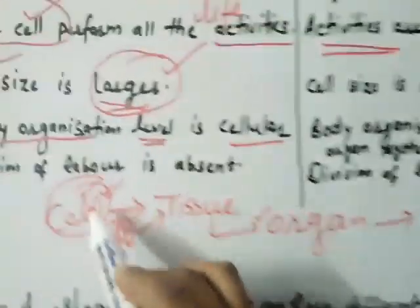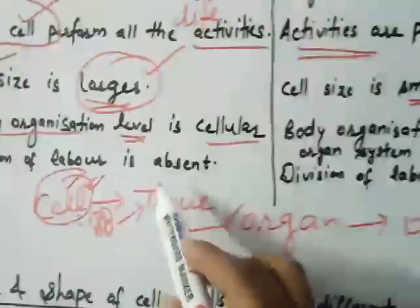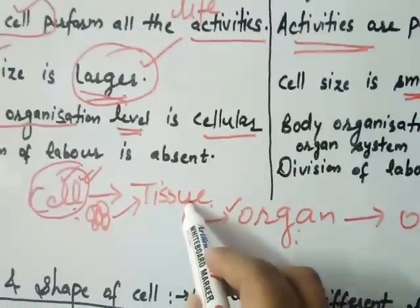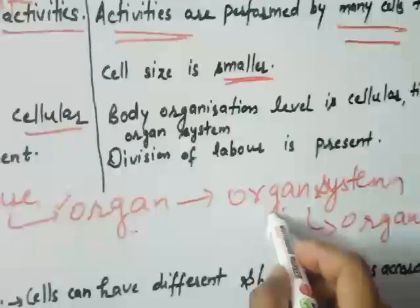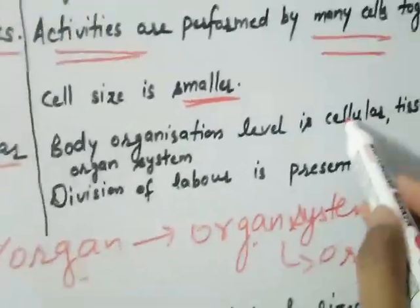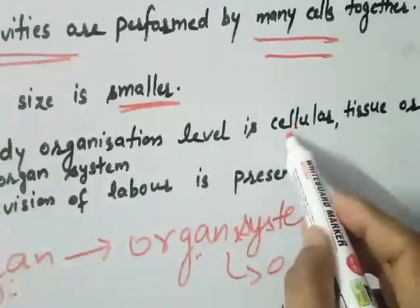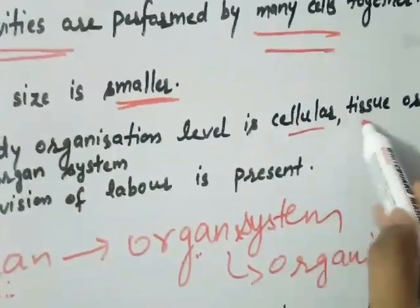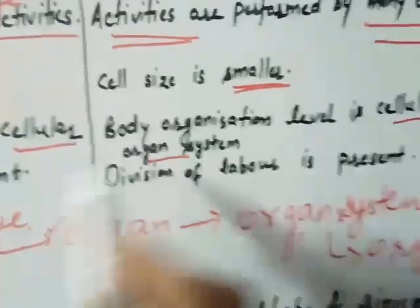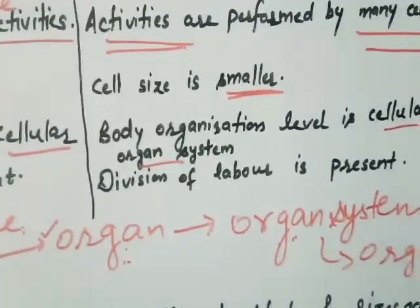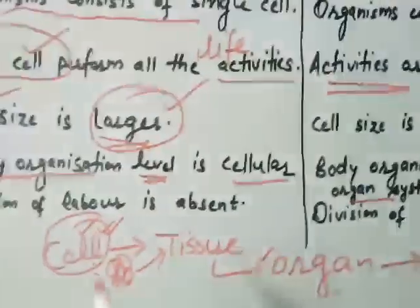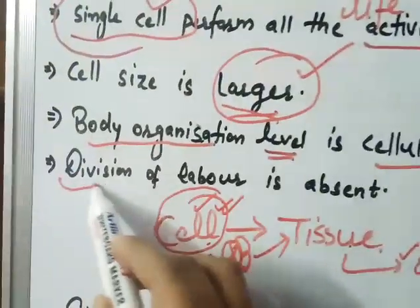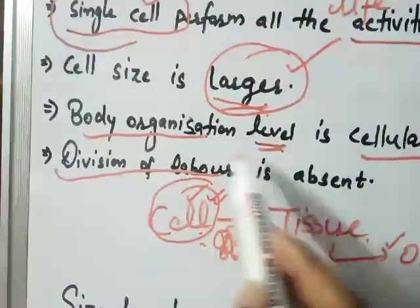What will be the body organization of a multicellular organism? The cells may have formed tissues, or organs, or organ systems. So the body organization will be at the cellular, tissue, organ, and organ system level of organization.